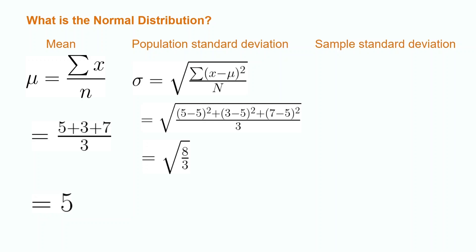Using the same numbers we used for the mean, we obtain a population standard deviation of 1.63. Calculating the sample standard deviation is identical. We just divide by n minus 1, rather than n. The n for population standard deviation is also capitalized, and the n for sample standard deviation is not.